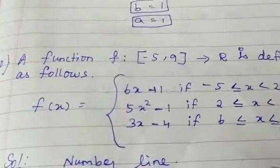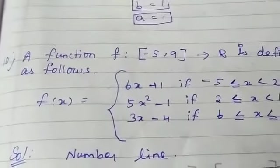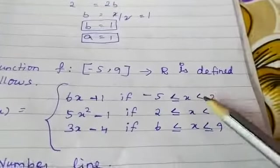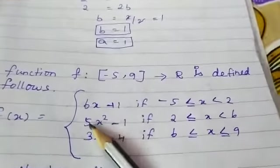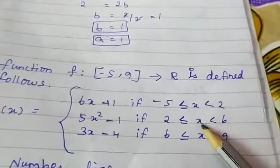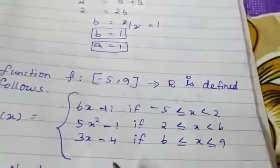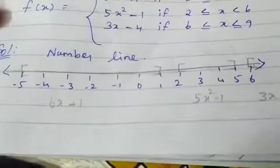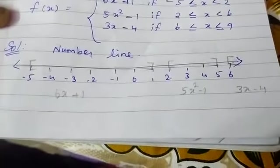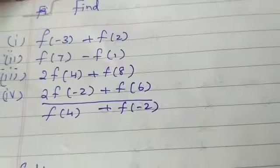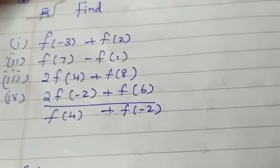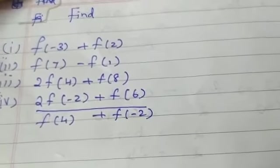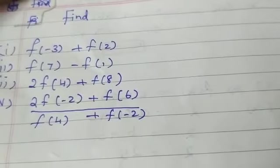In question 10, f: [-5, 9] → R is defined as: f(x) = 6x + 1 for -5 ≤ x < 2; f(x) = 5x² - 1 for 2 ≤ x < 6; f(x) = 3x - 4 for 6 ≤ x ≤ 9. We are asked to find: (1) f(-3) + f(2), (2) f(7) - f(1), (3) 2·f(4) + f(8), and (4) [2·f(-2) + f(6)] / [f(4) + f(-2)].